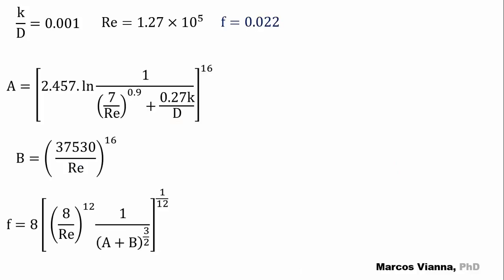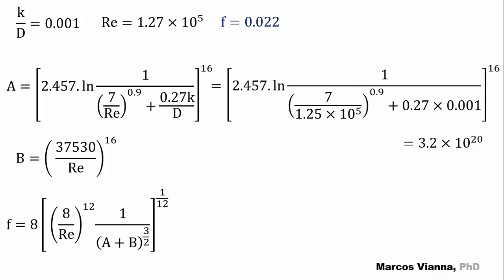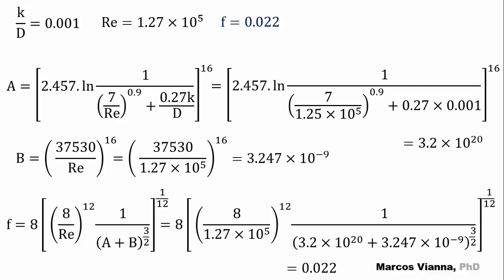Let's solve using the Churchill formula. First, we calculate A, then we calculate B, and this is what we find for f. The same value that we found on the Moody diagram.